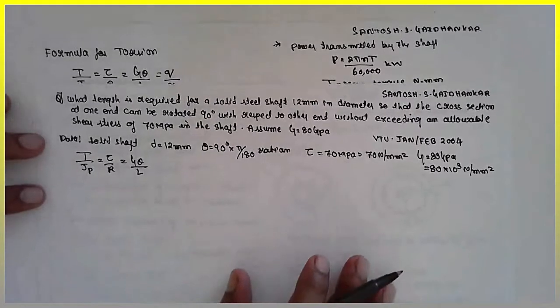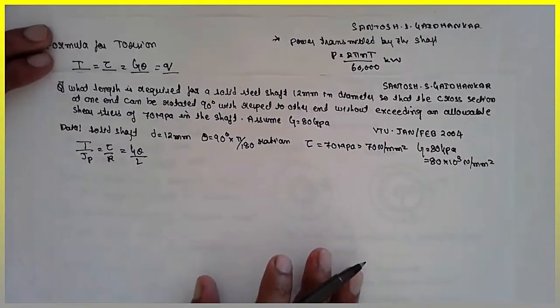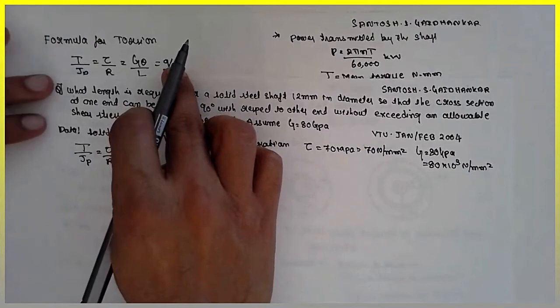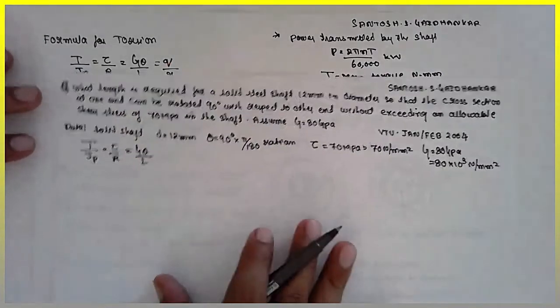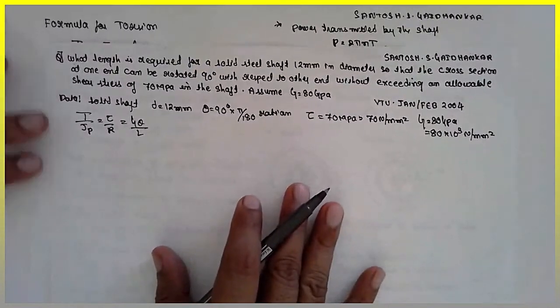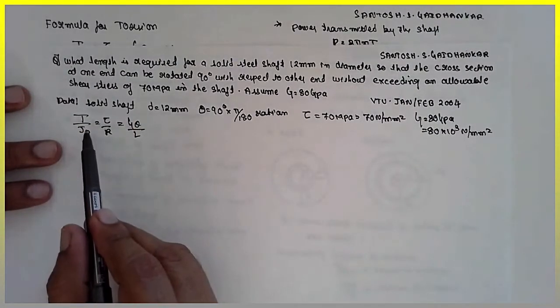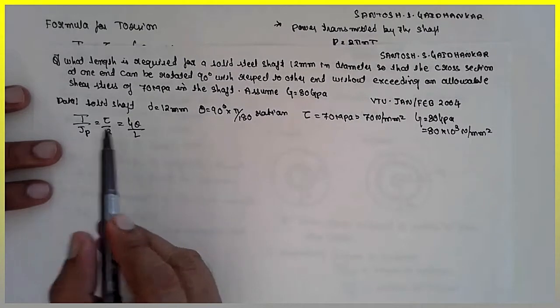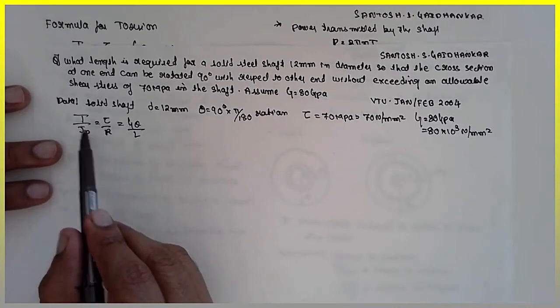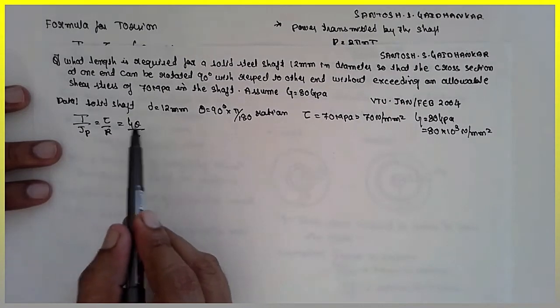Use this formula T divided by JP is equal to tau divided by R is equal to G theta by L. This is the basic formula for torsion. Now we have to find out the length. For finding the length, we have to go to combinations here, either T divided by JP or tau divided by R and G theta by L.